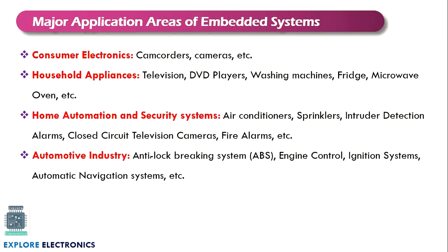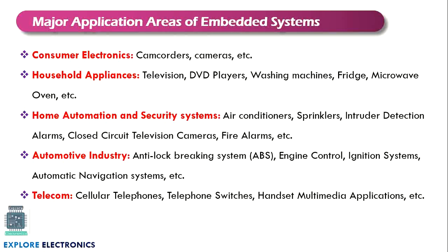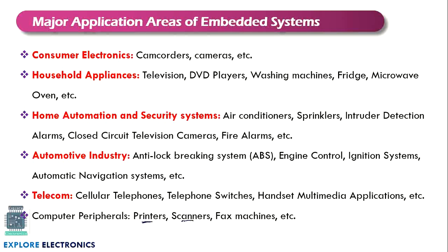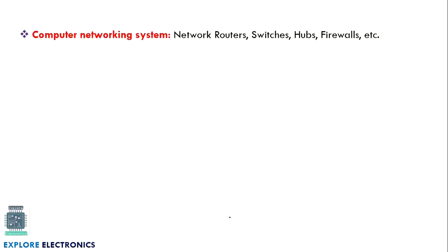In the automotive industry, many cars have automated features like anti-lock brake systems, engine cruise control, ignition systems, and automatic navigation systems. In the telecom sector, cellular telephones, telephone switches, handsets, and multimedia applications in handsets all come under embedded systems. Computer peripherals like printers, scanners, and fax machines are also embedded system applications. In networking, routers, switches, hubs, and firewalls all contain embedded systems inside.